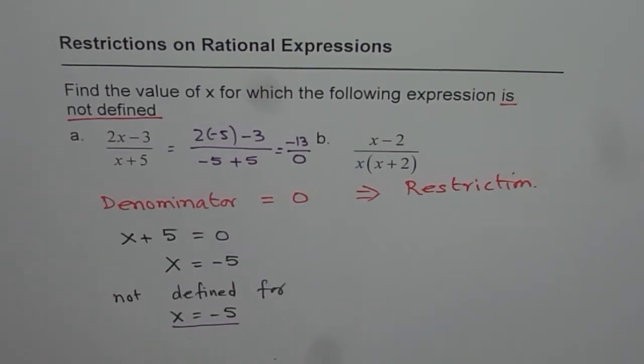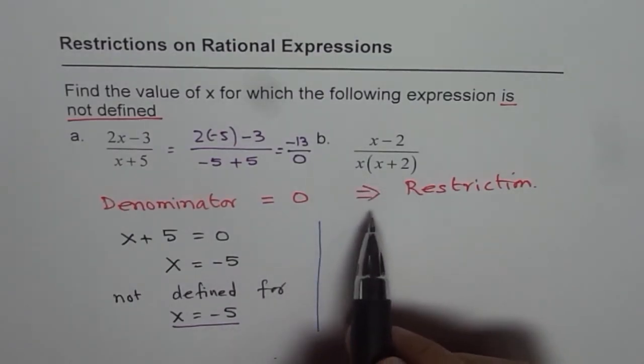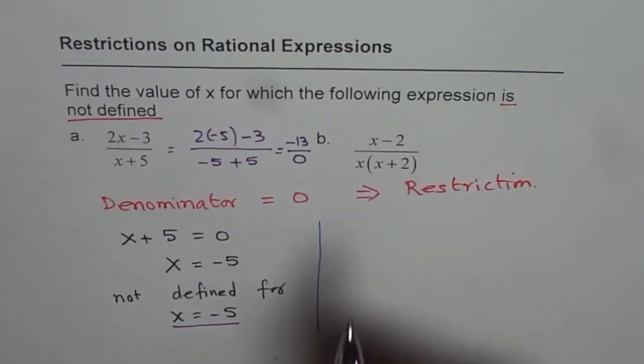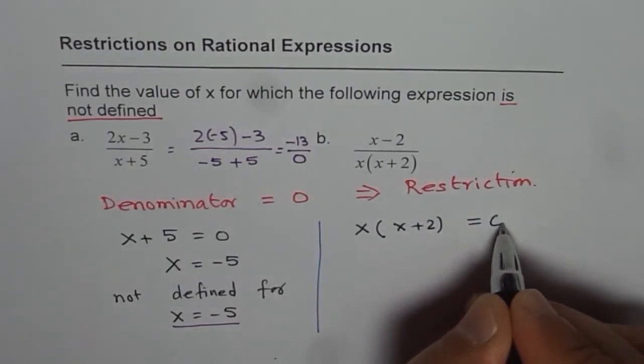I hope the concept is clear. Let us find out the restrictions for the second rational expression. Here we are given x minus 2 divided by x times x plus 2. To find restriction we will equate denominator to 0, that is x times x plus 2 equals to 0.